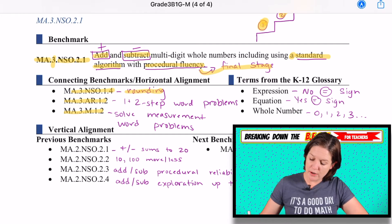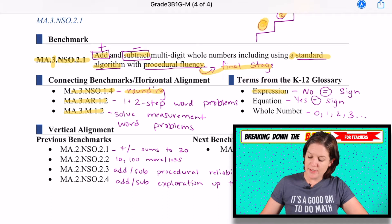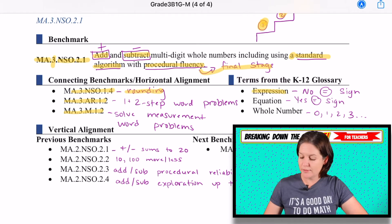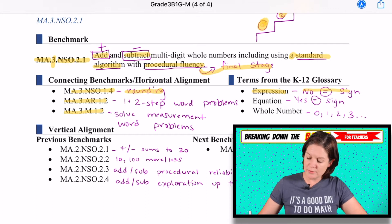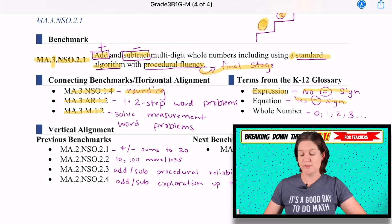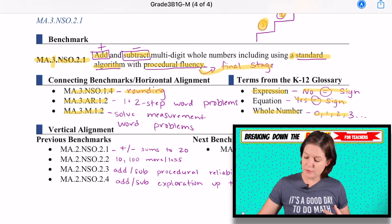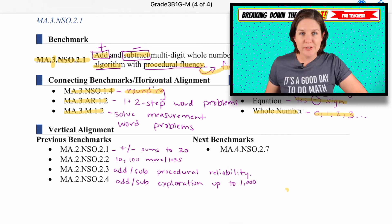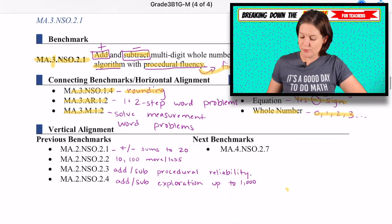Some terms that you need to know: expression is like two plus three, there is no equal sign present. An equation is yes, there is an equal sign present. And then a whole number is zero and up. In other words, no fractions, no decimals.